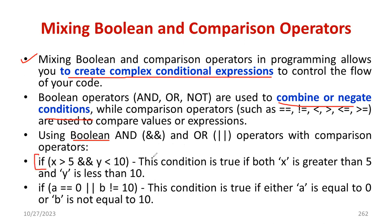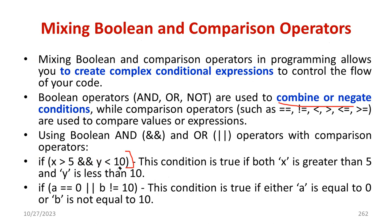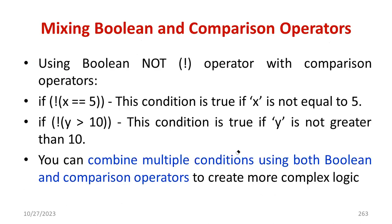Here is one example you can observe. You can see x greater than 5 and y less than 5. In between, we are using the AND operator. AND belongs to the Boolean operator category, while greater than and less than belong to comparison operators. So this particular statement belongs to the combination of Boolean and comparison operators, and it is suitable for complex conditional statements.